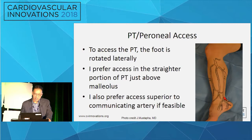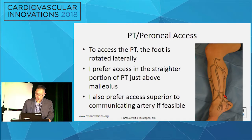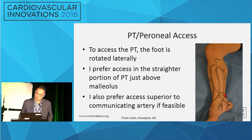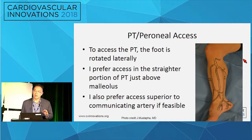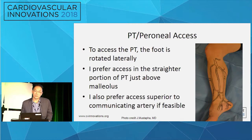For PT and peroneal artery access, ideally if the patient can frog their leg out, this makes it a lot better. I like to get it above the ankle, within four finger-breadths above the ankle, where it's a little straighter and deeper - I do it because I like long access. Peroneal access you can get from an anterior approach and a posterior approach. Typically by ultrasound I go posterior, but it's just about twice as deep. If I can't see it with ultrasound, I'll go anterolateral.